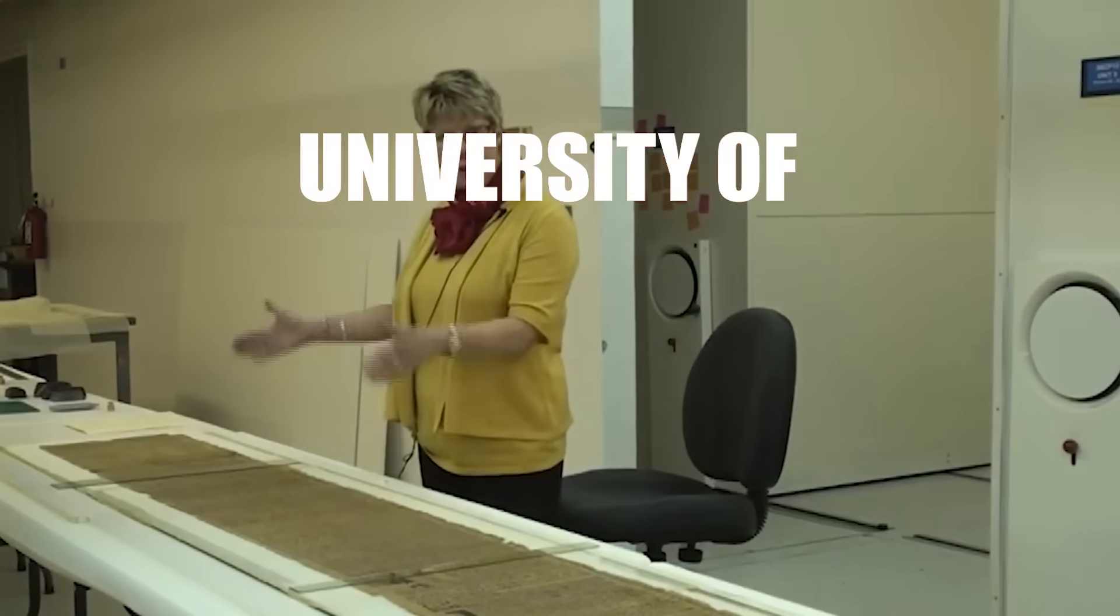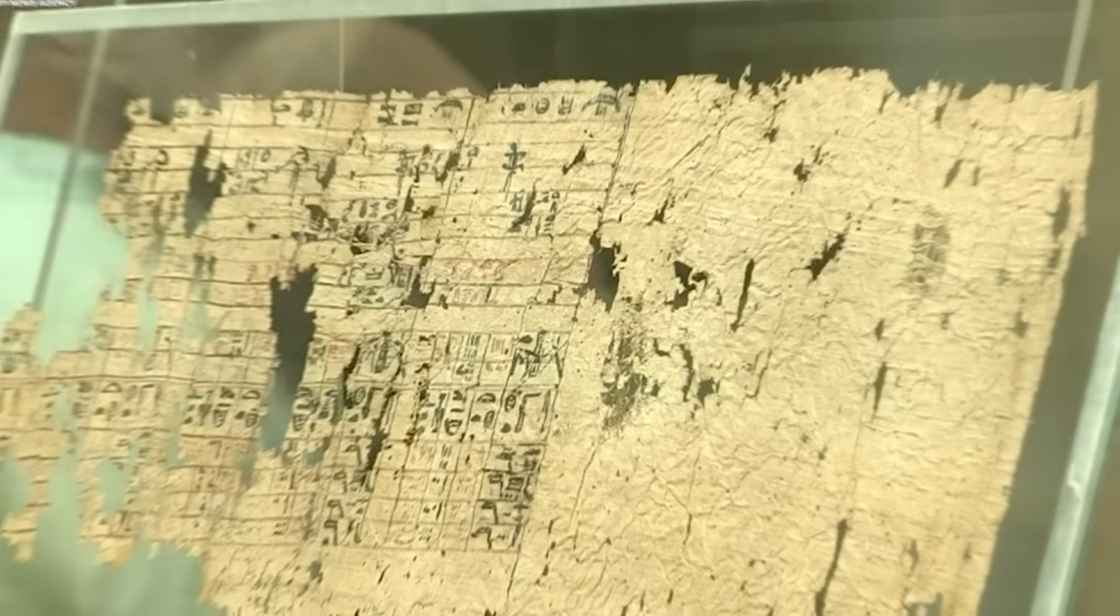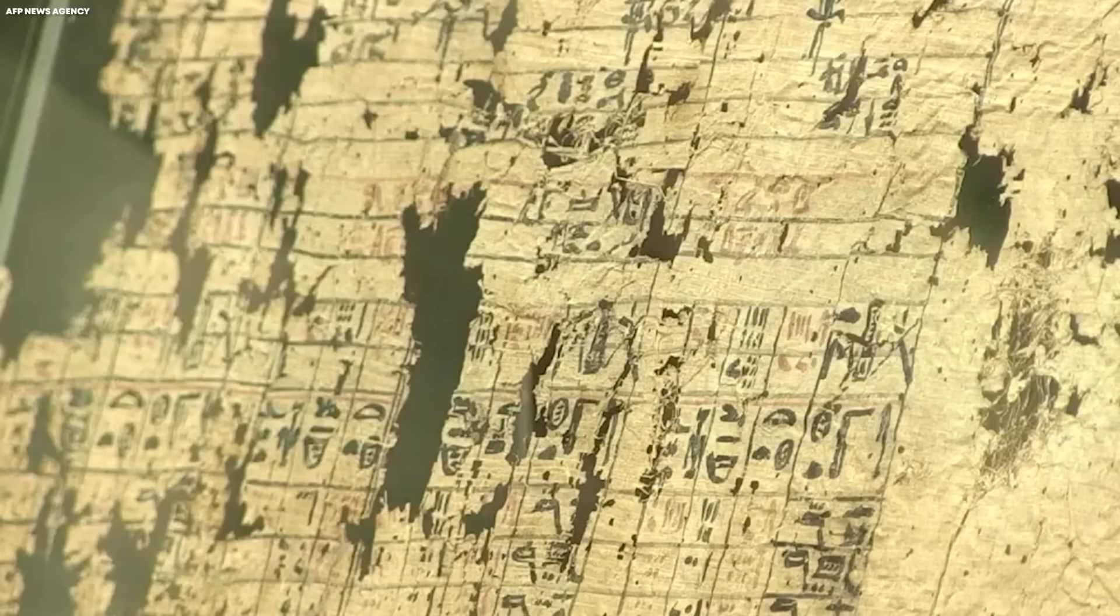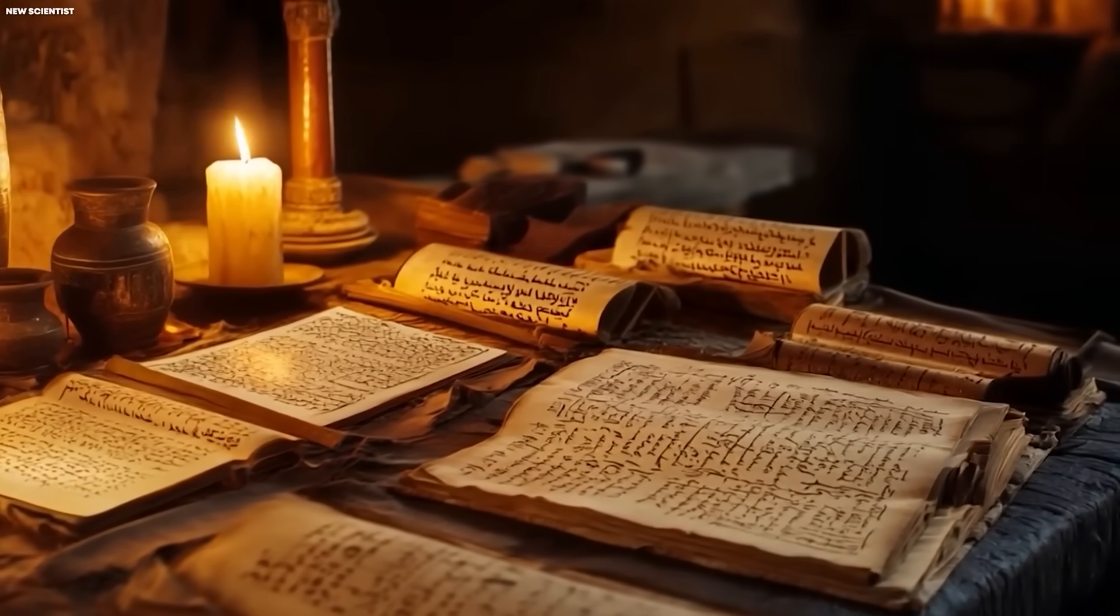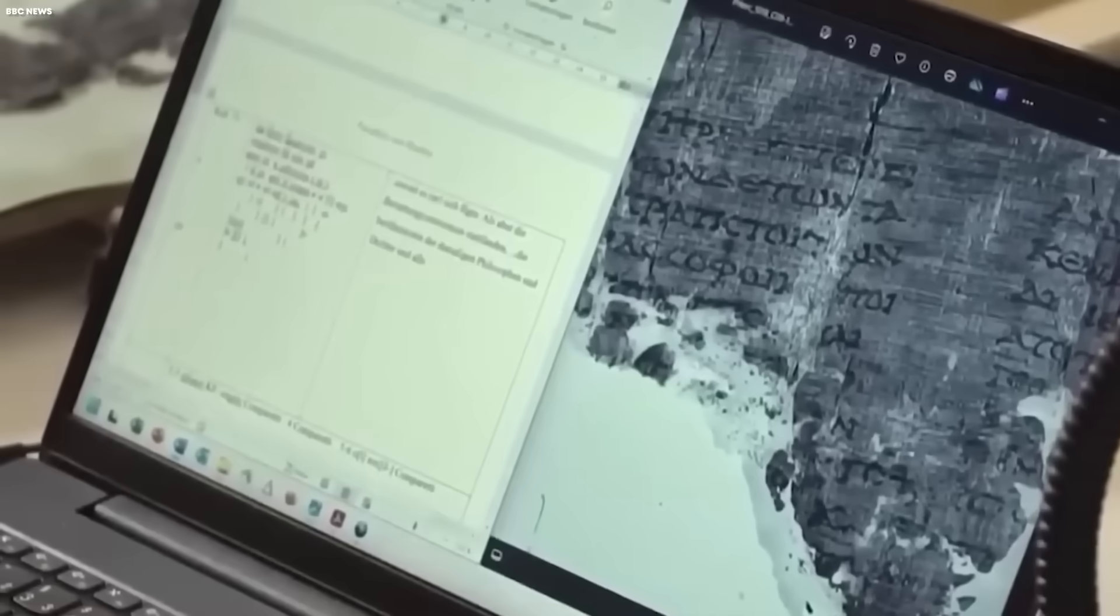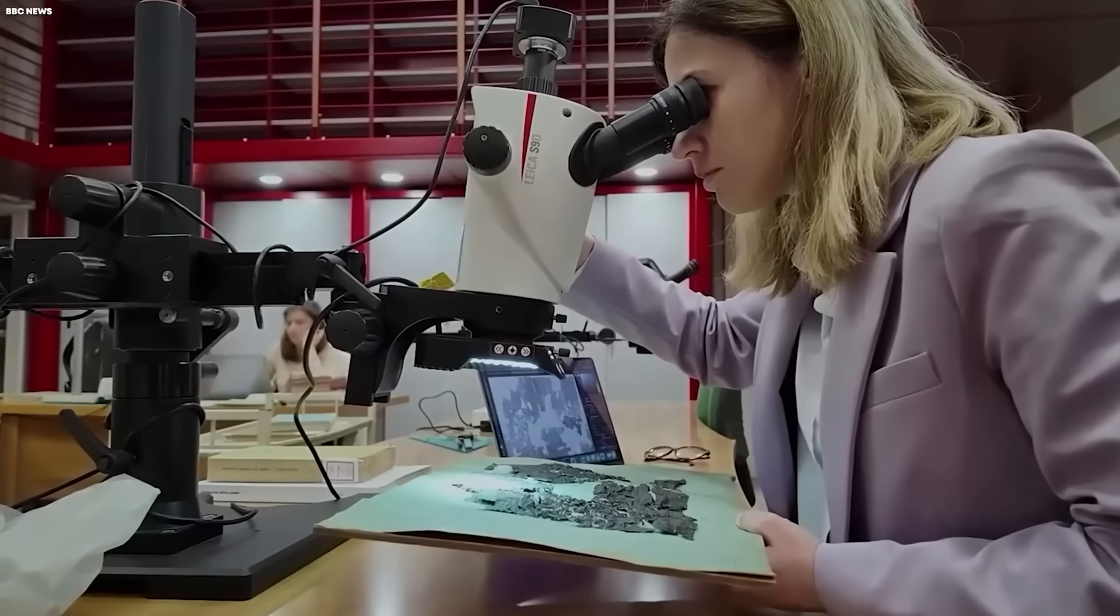Funded by the University of Kentucky and tech investors, the model was trained on ink textures and geometry to reconstruct full letters. Historians call it one of the most remarkable intersections of AI and archaeology, unlocking ancient knowledge trapped for millennia.